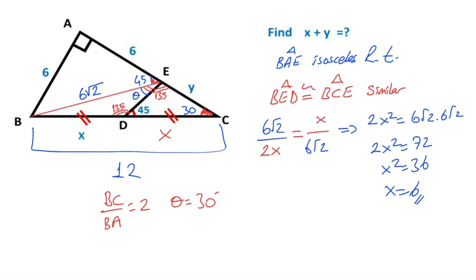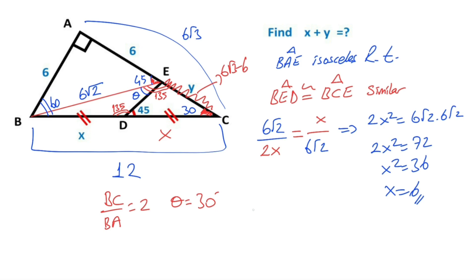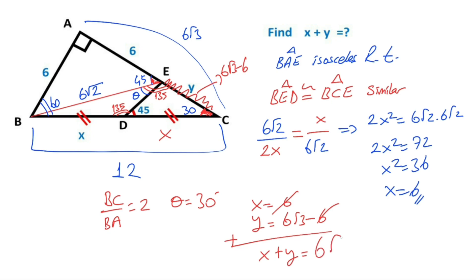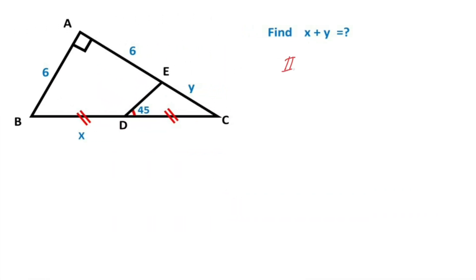If there are six units opposite the 30 degrees, then the side opposite the 60 degrees must equal 6√3. Therefore y equals 6√3 minus 6 units. So x equals 6 units and y equals 6√3 minus 6 units, therefore x plus y equals 6√3. This was the first method.